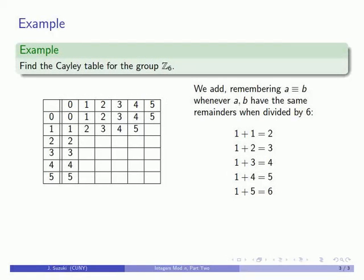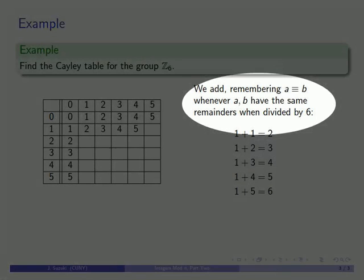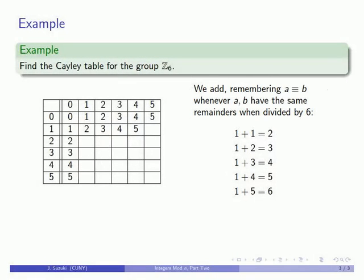But there is no element 6. That means we're going to have to replace 6 with something. To find that, we need to find a number with the same remainder when divided by 6. When 6 is divided by 6, the remainder is 0, so 6 and 0 are congruent, and so 1 plus 5 is congruent to 0.